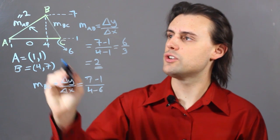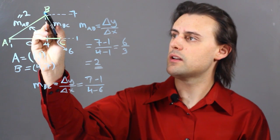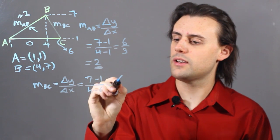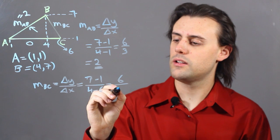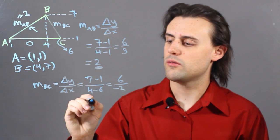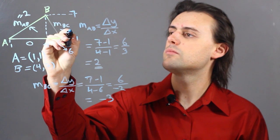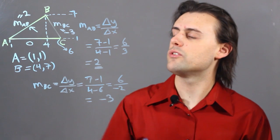Since I chose the ordering to be coordinate B and then coordinate C, I get 6 divided by negative 2, which is equal to negative 3, which is a downward slope.